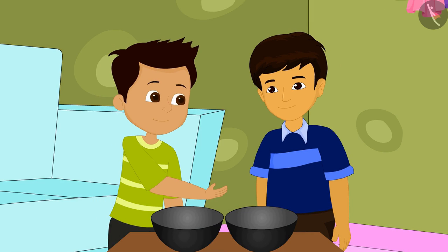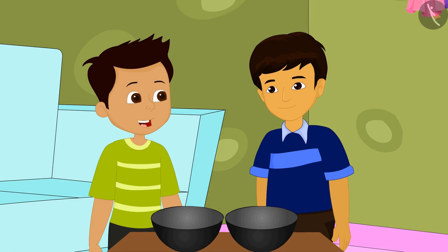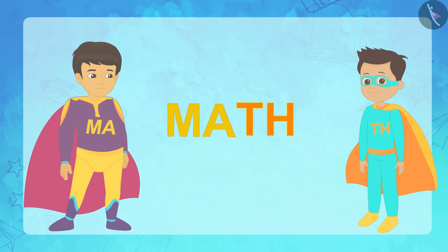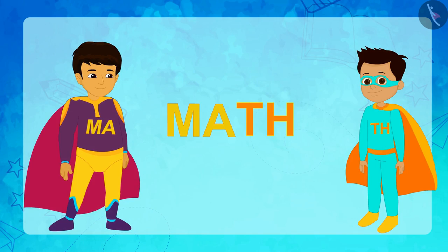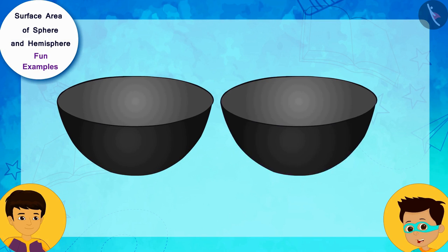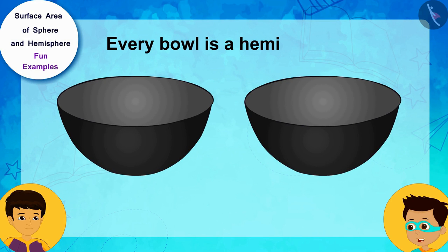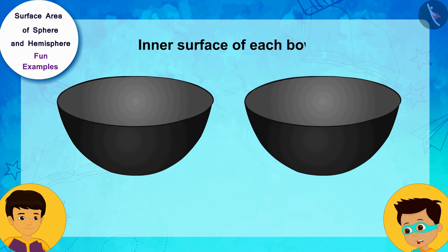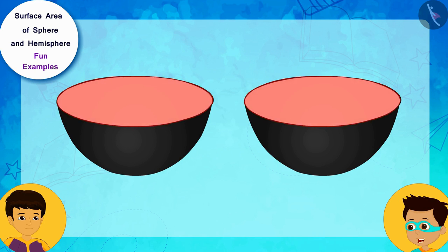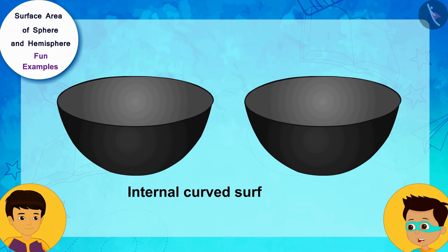We can find the solution to this through mathematics. That means, it's math time! Look, every bowl is a hemisphere. And, because we have to get the inner surface of each bowl covered, the surface of each bowl will be equal to its internal curved surface area.